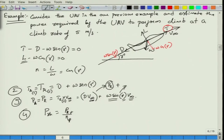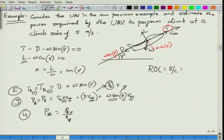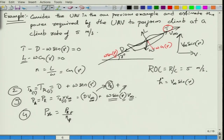In this question, we are given the rate of climb. R/C or ROC stands for rate of climb, given as 5 meters per second. The vertical component of velocity Ḣ equals V sin γ, and the horizontal component is V-infinity cos γ. For example, at time t1 when climb is initiated, and after time t2, the aircraft climbs to altitude h2, with h1 being the initial altitude.